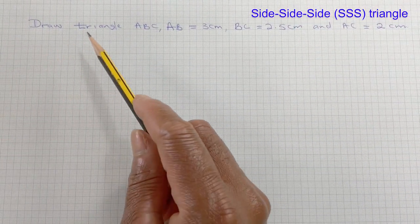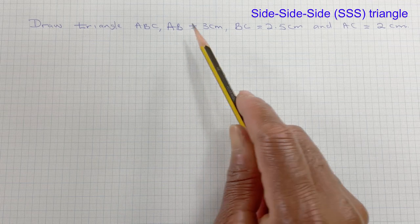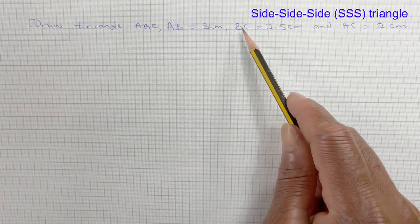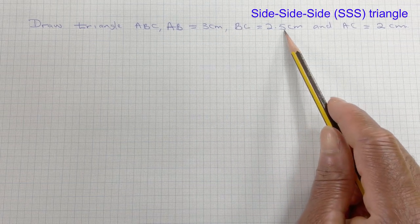Draw triangle ABC where AB equals 3 cm, BC equals 2.5 cm, and AC equals 2 cm.